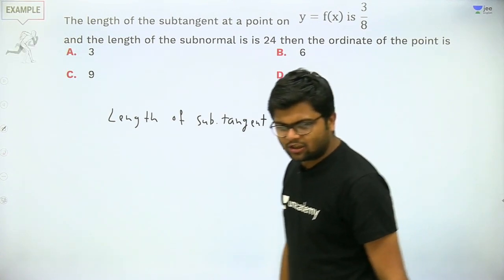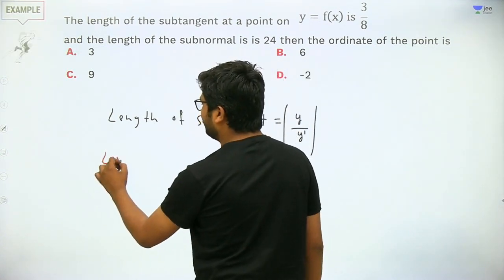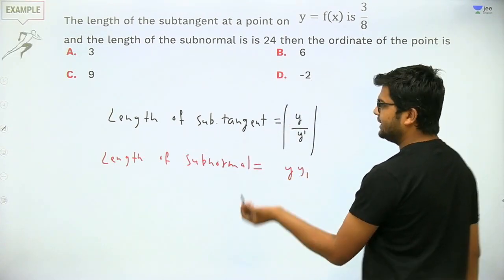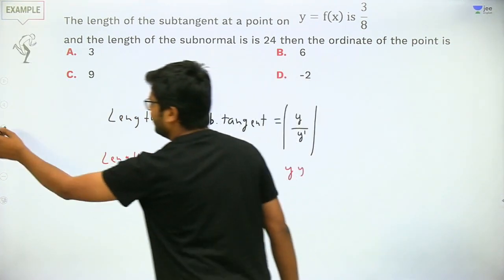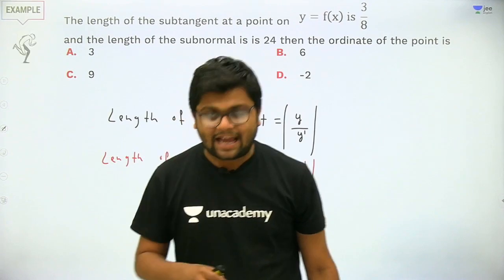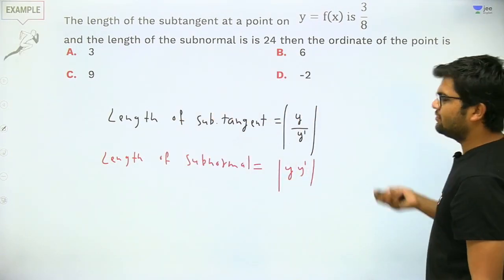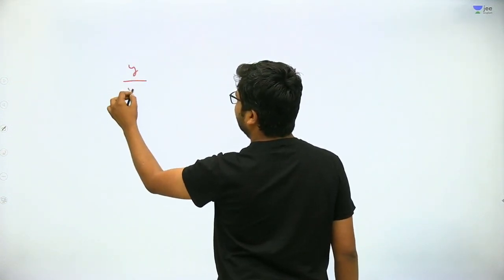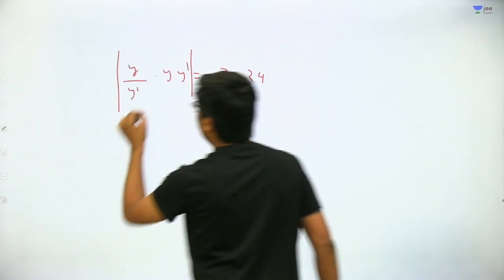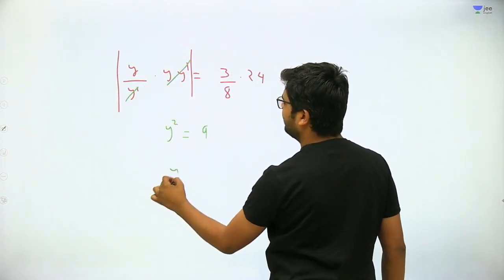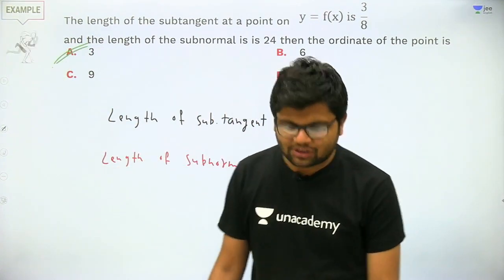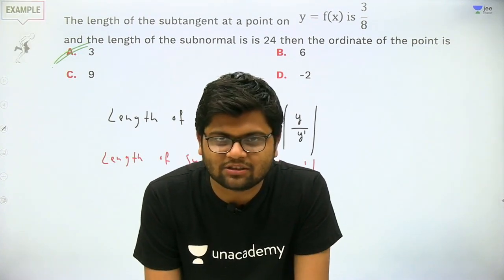Given sub-tangent = 3/8 and sub-normal = 24, multiply them: |y/y'| × |y·y'| = (3/8) × 24. The y' terms cancel, giving y² = 9, so y = 3. The ordinate of the point where sub-tangent is 3/8 and sub-normal is 24 is 3.